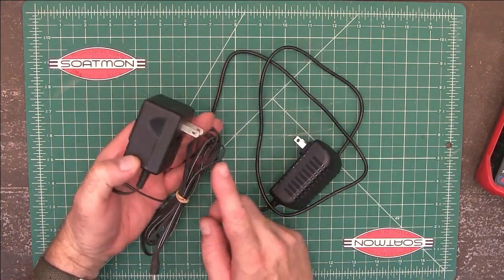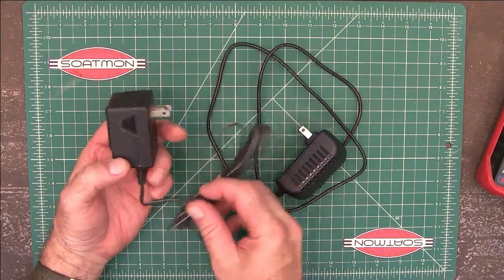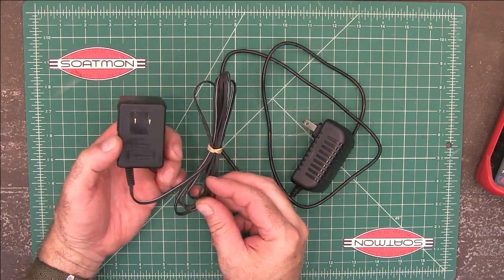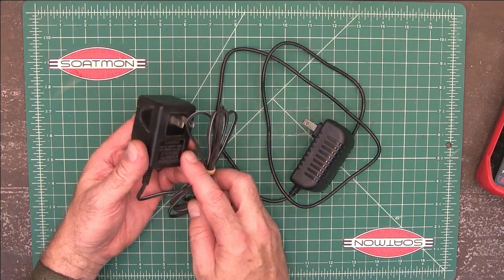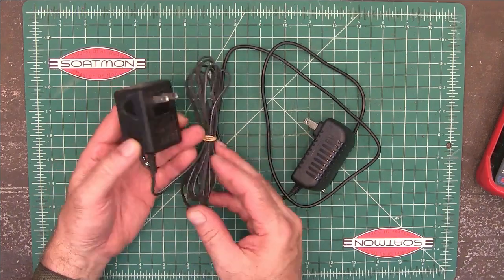You find these wall warts or little transformers on almost everything we buy nowadays. And so every time I throw one of those pieces of equipment away, I keep the transformer off of it and just keep them in a box. And so then when I need one, I rarely have to buy it.